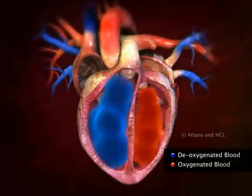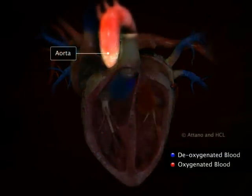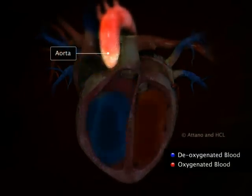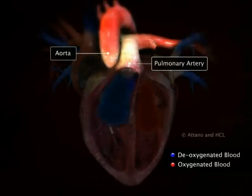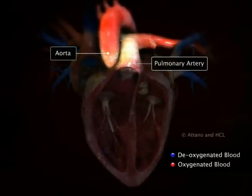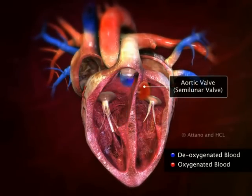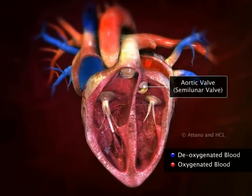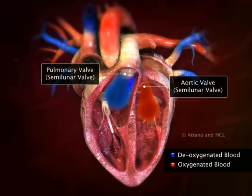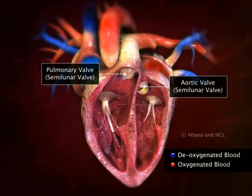The left ventricle opens into the aorta and the right ventricle opens into the pulmonary artery. The openings to these blood vessels are guarded by semilunar valves: the aortic valve between the left ventricle and the aorta, and the pulmonary valve between the right ventricle and the pulmonary artery.